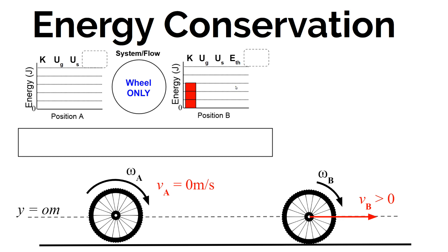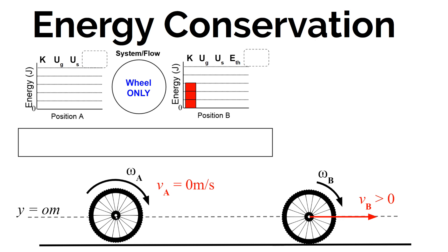At position B there is translational kinetic energy. At position A there is no translational kinetic energy because the center of mass isn't moving through space — it's held at rest while rotating about its pivot point. Does that mean the wheel has no kinetic energy? It's not moving through space, so it has no translational kinetic energy. But because the tire is rotating, each little piece of the tire is moving tangentially to the pivot point, so each little point has kinetic energy because it's actually moving through space around that pivot.